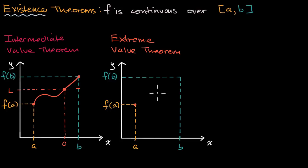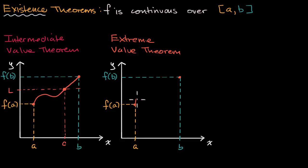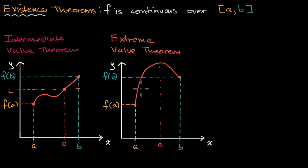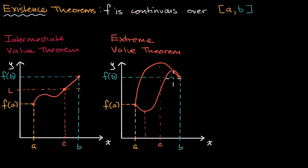Try to draw a function that does not take on a minimum and maximum value over that interval. If I draw a straight line, the maximum value happens when x is b and the minimum value happens when x is a. If I draw something more curved, the maximum value occurs at some interior point c, and the minimum value is occurring at a. Drawing yet another shape, the minimum value is occurring at one x value and the maximum at another. This is just saying that they exist.